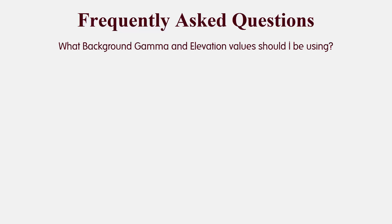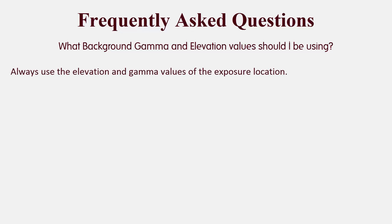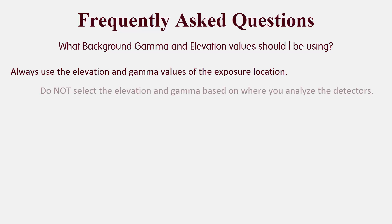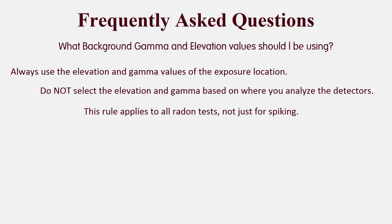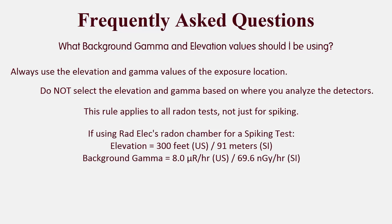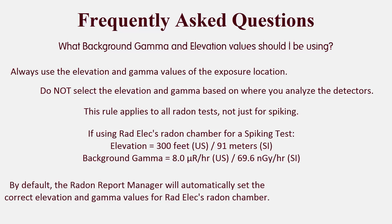One of the most common errors we run across: what background gamma and elevation values should I be using? Always use the elevation and gamma values of the exposure location — do not select them based on where you analyze the detectors. This rule applies to all radon tests, not just spiking. For example, if you read your electrets on top of a mountain but deployed them in a valley, you must use the elevation and background gamma of that valley. If you're using Radelec's radon chamber, the elevation is 300 feet and the background gamma is 8.0 micro-R per hour — or 91 meters and 69.6 nanograys per hour in SI units. By default, the Radon Report Manager will automatically set the correct elevation and gamma values for Radelec's radon chamber, but this option can be disabled.